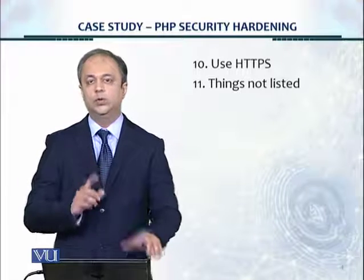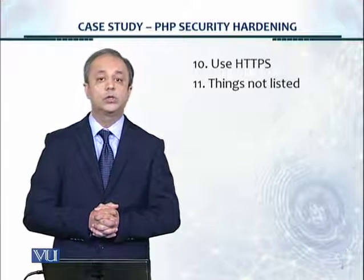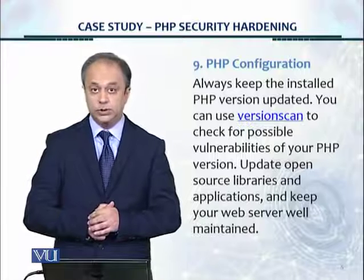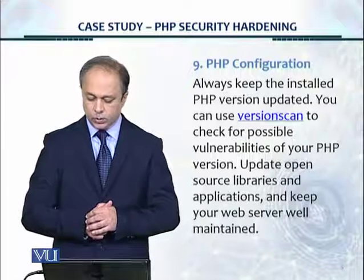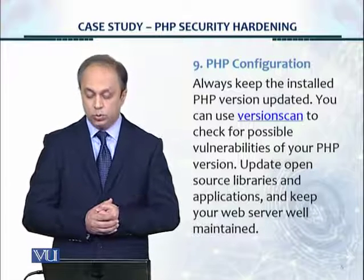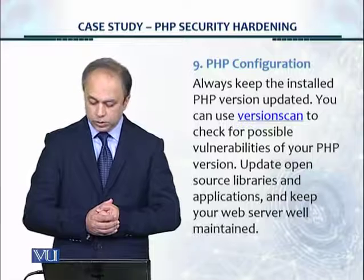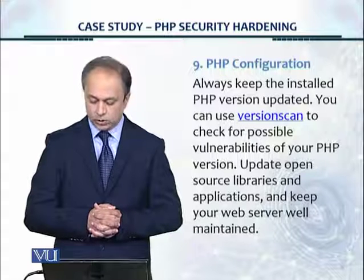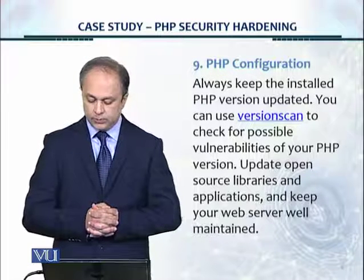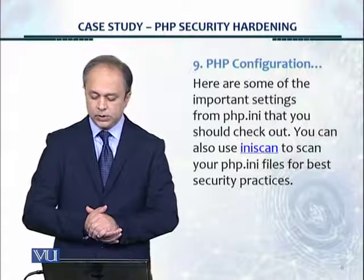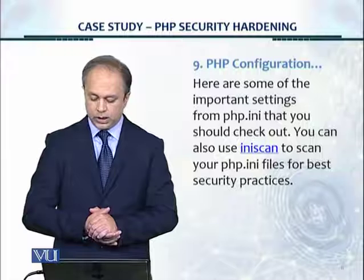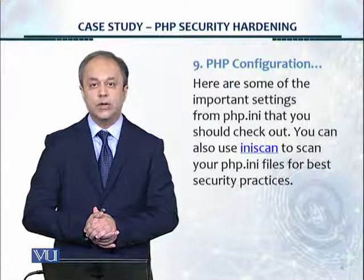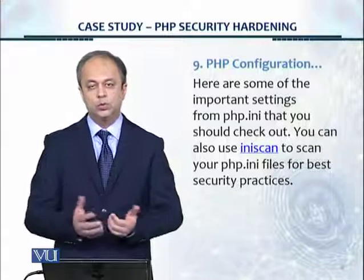Let's briefly look at control number nine — PHP configuration. Always keep the installed PHP version updated. You can use a tool called version scan to scan your PHP version and identify associated vulnerabilities; it can be found and downloaded via Google. Also update open source libraries and applications and keep your web server well maintained. Some important settings from php.ini should be checked, and you can use another tool called anyscan to scan your php.ini files for best security practices. This source also provides links to additional tools available.